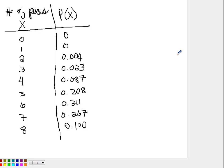So, let's say you have 2 peas, the probability that they have green pods would be 0.004. Go down to number 7, if you have 7 peas, the probability that you get green pods is 0.267. So, these are the number of peas and the corresponding probabilities.